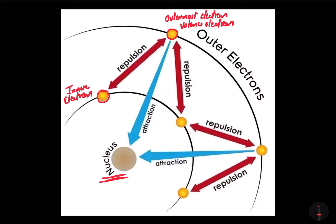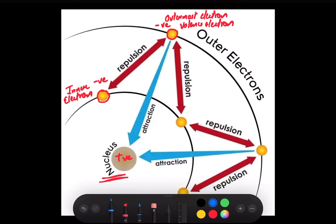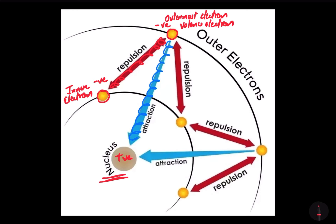As we all know, the electrons are negatively charged, and the nucleus is positively charged. There will be attractive forces between the outer electron and the nucleus, and at the same time, there will be repulsive forces between the outer electron and the inner electron. Due to this, the outermost electron will feel less attractive forces from the nucleus — the outer electron experiences reduced attractive forces by the nucleus.